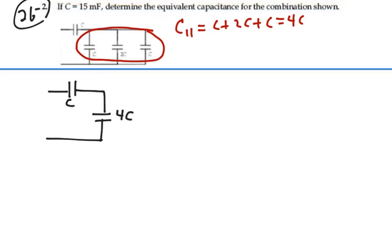Now this combination is in series because we're along one line. And for a series combination we could do 1 over C equivalent equals 1 over C plus 1 over 4C. But since there's only two of them,